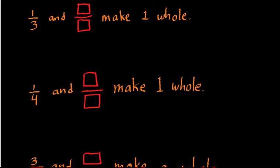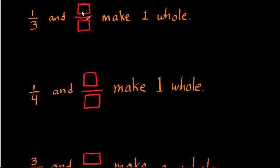So the first problem says 1 third — 1 over 3 — and I have two red squares. I want you to fill in what's in these squares to make one whole. So the question is, what do you need to add to 1 third in order to make one whole? Well, let's think of it this way.